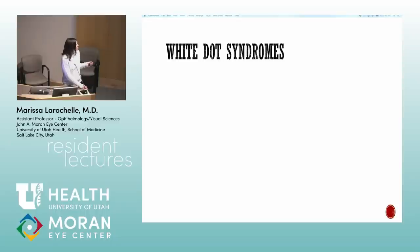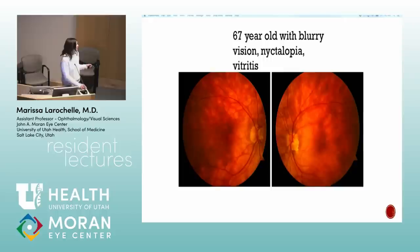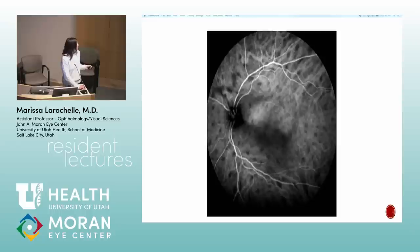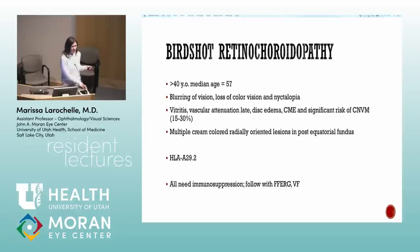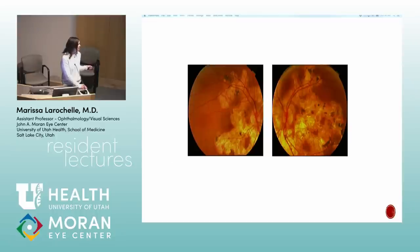White dot syndromes: try to remember distinguishing features rather than viewing them as a blur. Birdshot: older person with nyctalopia, multiple ovoid cream-colored lesions in the posterior pole, and floaters. On ICG, hypofluorescent lesions — more visible on ICG than on exam or FA. HLA-A29.2 is associated. All need immunosuppression and are followed with visual fields and ERGs. Serpiginous: snake-like appearance possibly originating from the optic nerve. Tends to affect older people badly, may need alkylating agents. Block-early, stain-late pattern on FA.